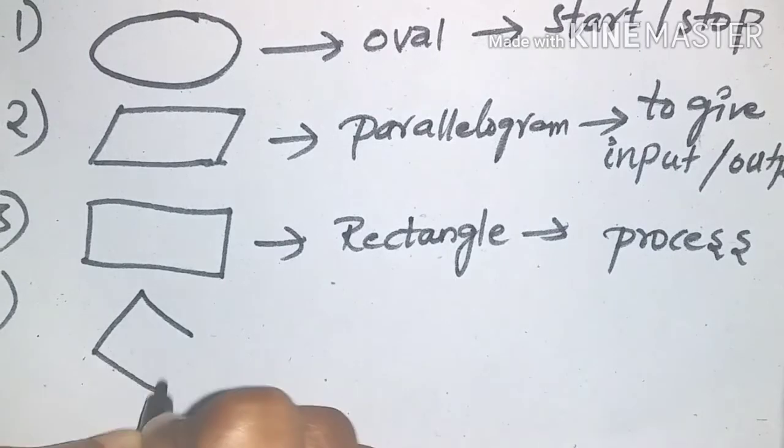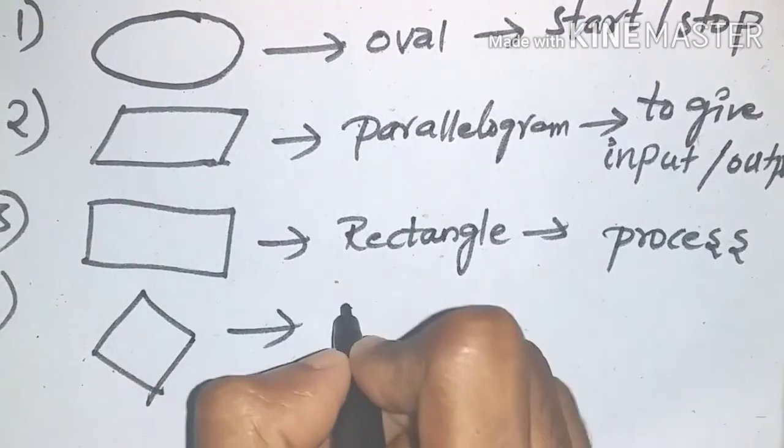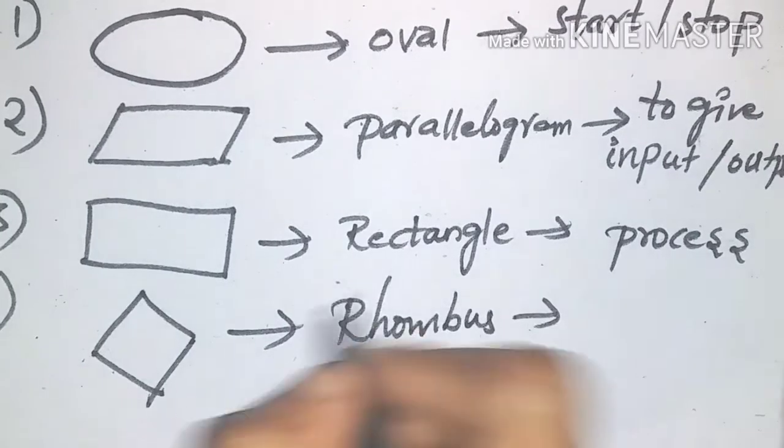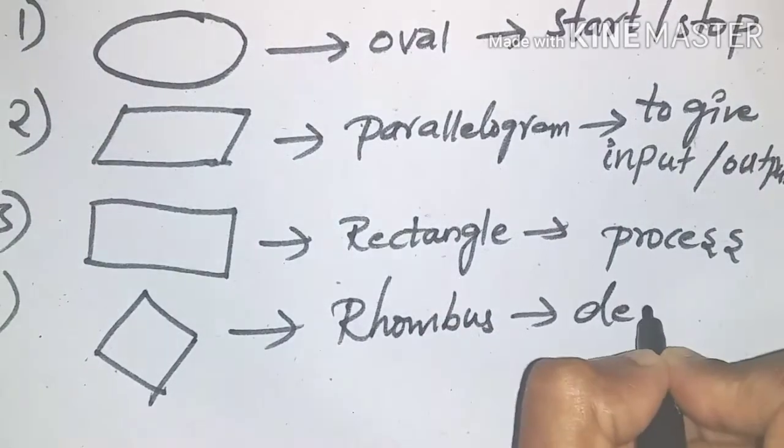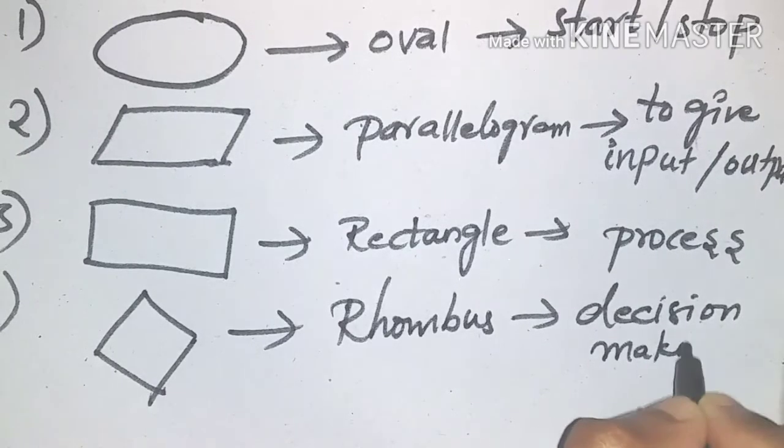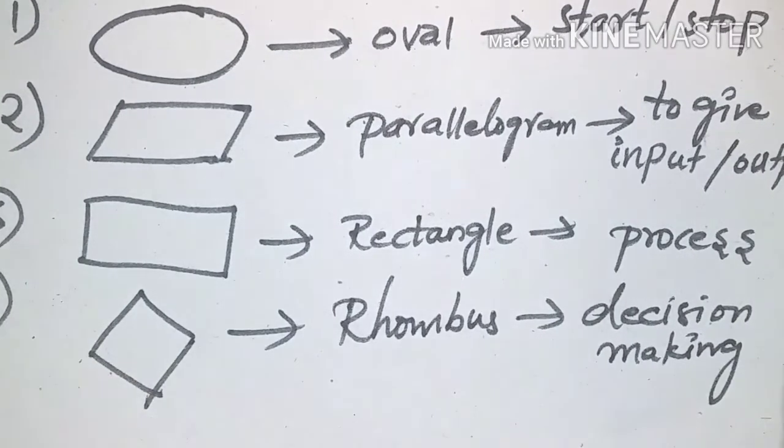Next one is decision making, and the symbol is rhombus. This is used for decision making, like if you wanted to choose any kind of decisions - whether it is correct or not, or it is true or false. This decision box is used.